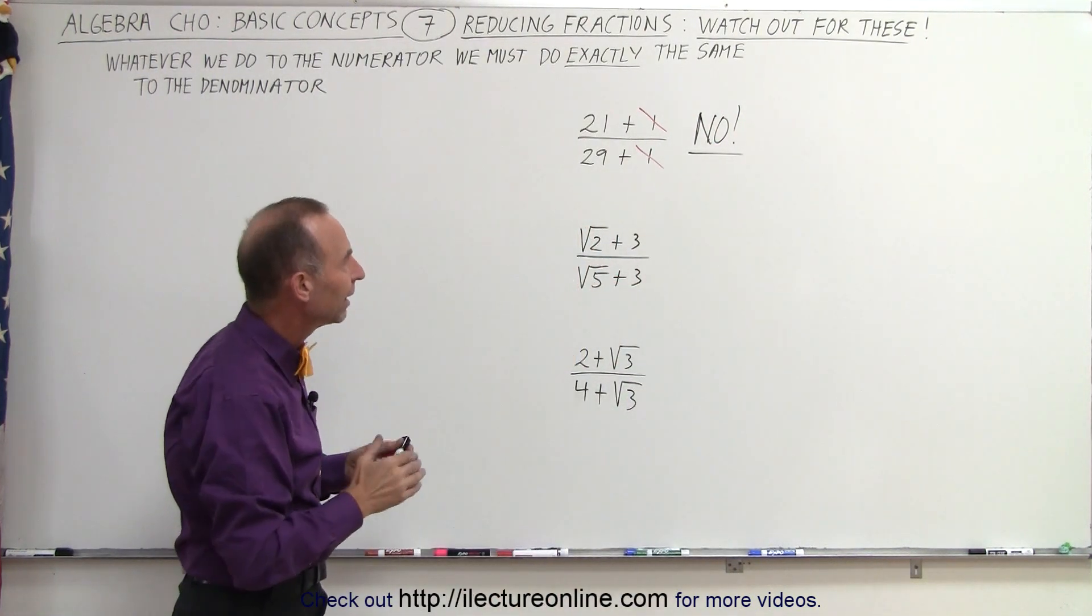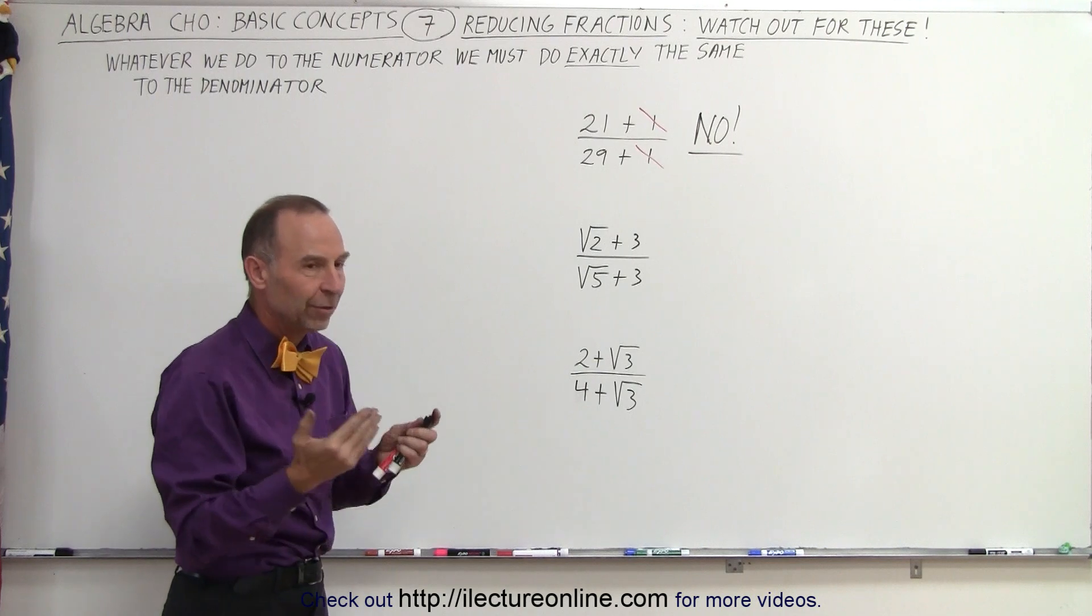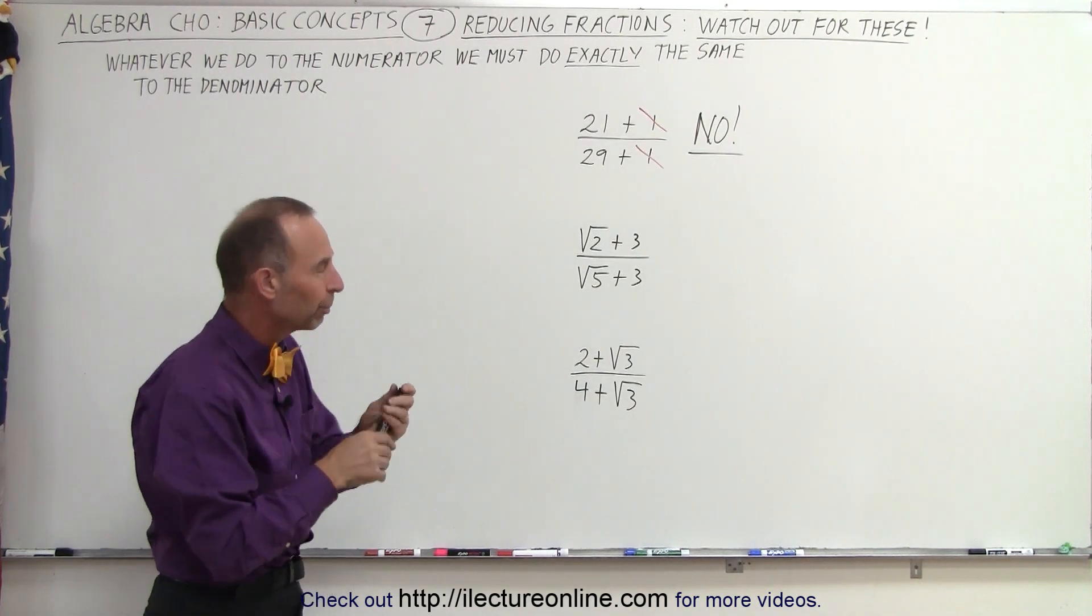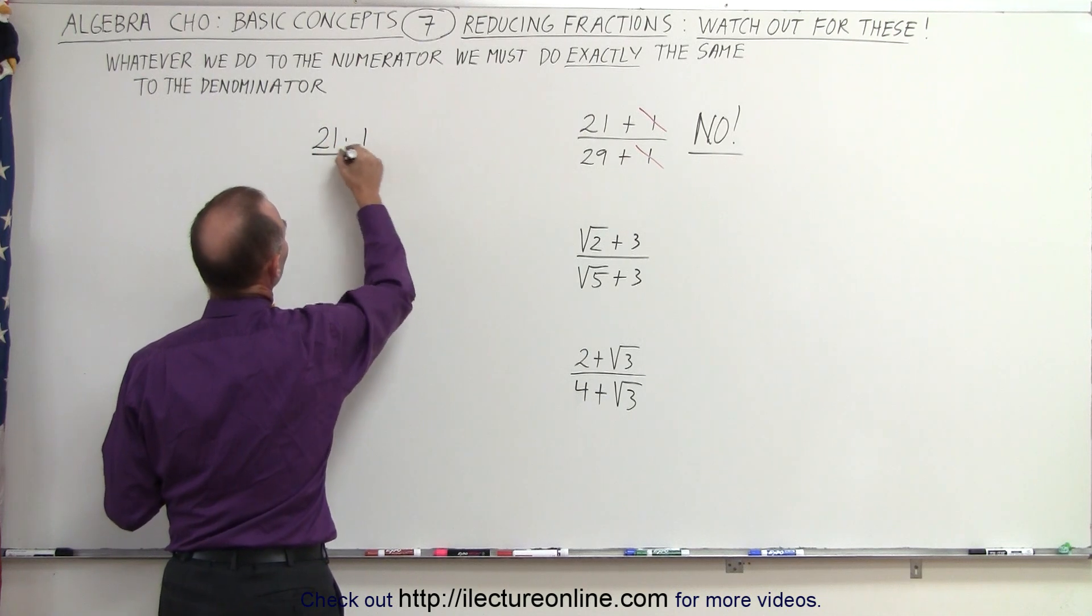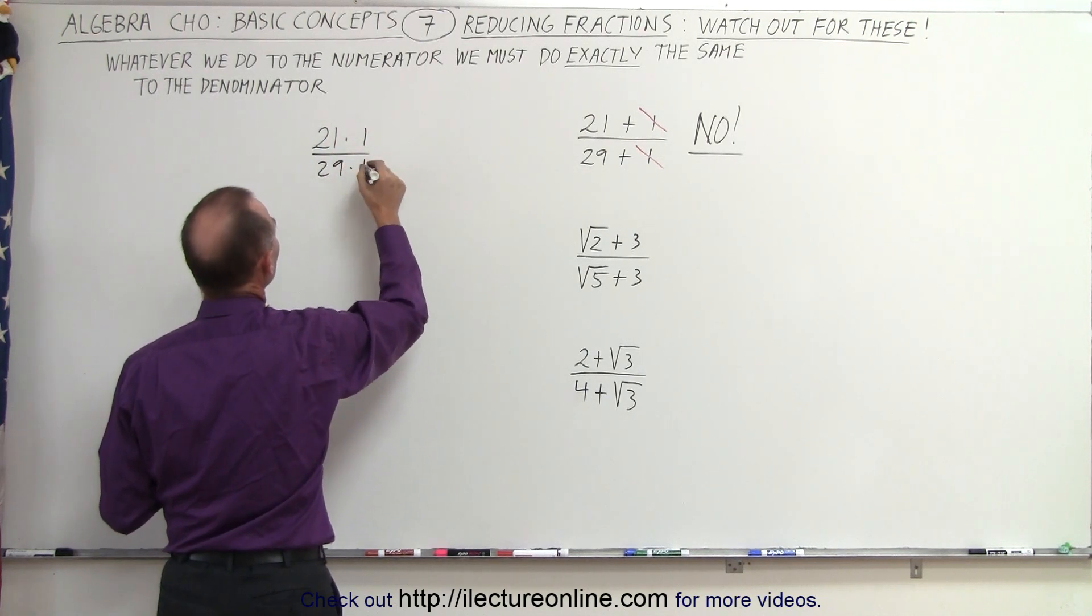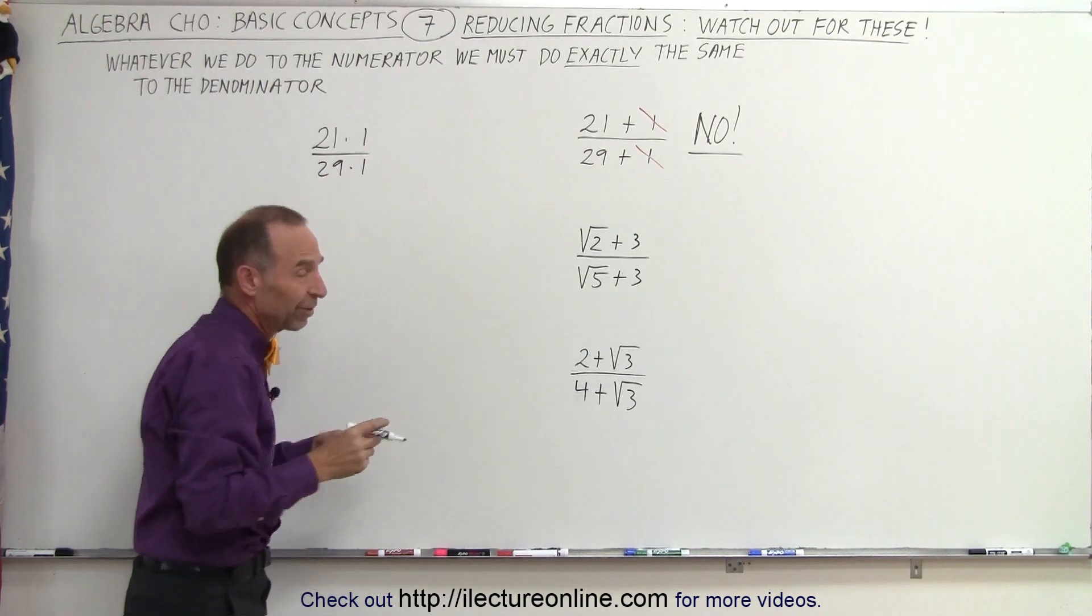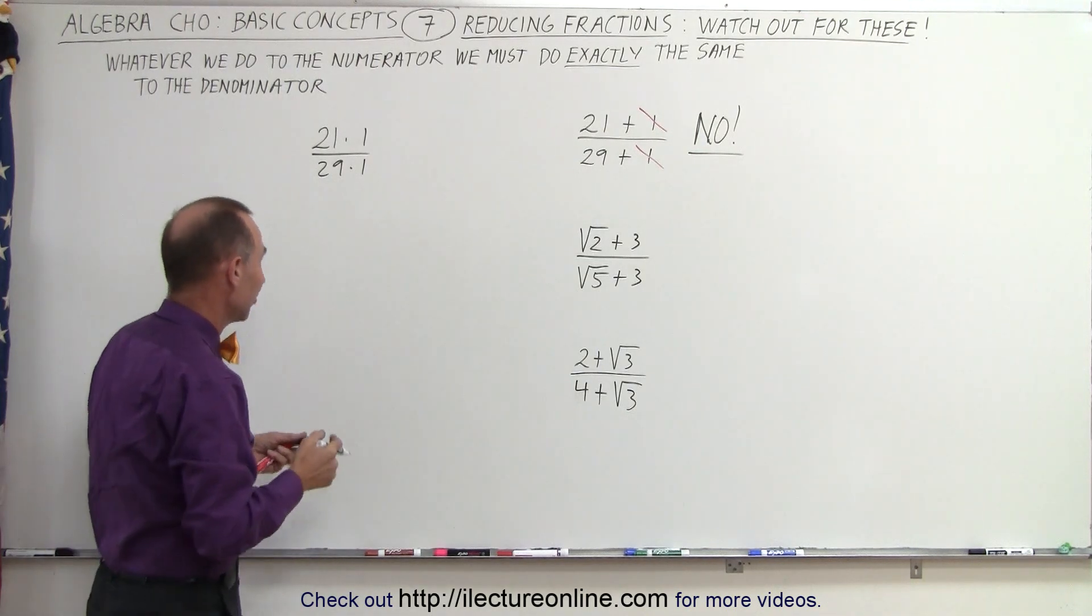Well, you can only do that if they are factors. Factors meaning when the numbers are multiplied together. For example, if you have 21 times 1 divided by 29 times 1, then you can reduce the ones. Although reducing by 1 doesn't make any difference in this case.